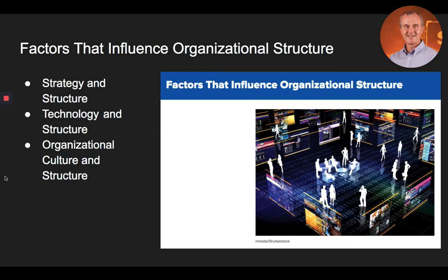In summary on the factors that influence organizational structure: three factors influence organizational structure — strategy, technology, and the company's culture. The relationship between strategy and structure is an important factor in determining overall effectiveness. Three levels of technical complexity affect the design of an organization's structure: small batch unit production for customized products, large batch production for standardized products, and continuous process production — a highly automated approach that is efficient and runs with little interruption. Finally, a company's culture can help motivate and coordinate employee behaviors and may provide a source of competitive advantage.